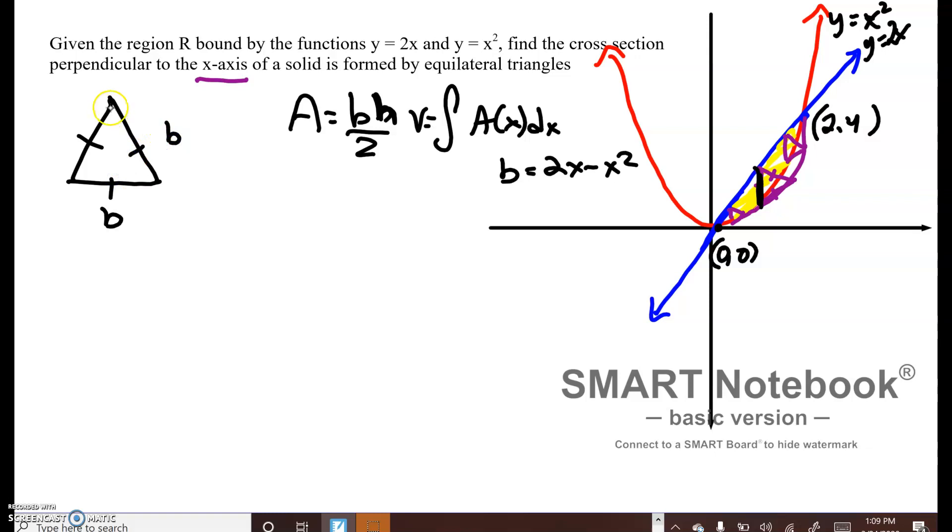The nice thing about equilateral triangles: if you draw an altitude, it's going to cut this in half. I could say that this is b over 2, and this is b over 2, and I'm going to call this altitude h. I need to get h in terms of b.